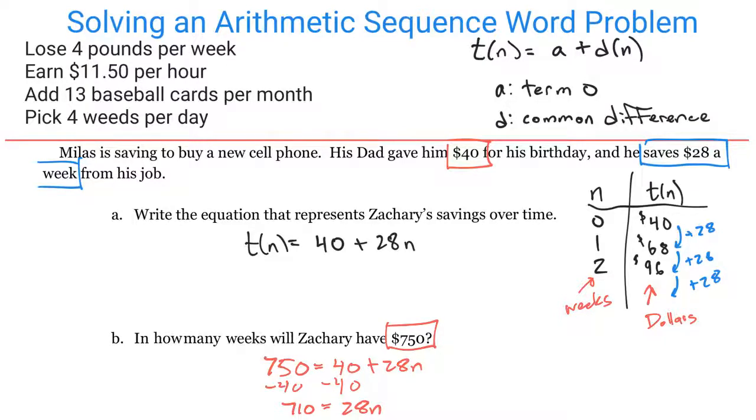Dividing, N = 710/28 = 25.36 weeks. However, that's not the answer we can work with because this is a sequence.